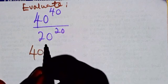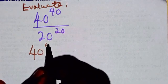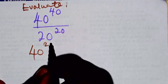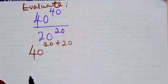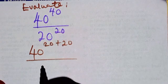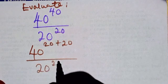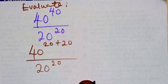40 to power 40 can be written as 40 to power 20 plus 20, then divided by 20 to power 20, right?